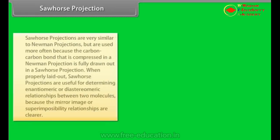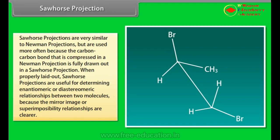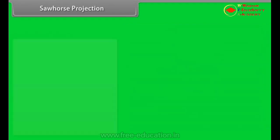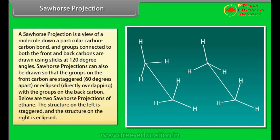Sawhorse projection. Sawhorse projections are very similar to Newman projections, but are used more often because the carbon-carbon bond that is compressed in a Newman projection is fully drawn out in a sawhorse projection. When properly laid out, sawhorse projections are useful for determining enantiomeric and diastereomeric relationships between two molecules because the mirror image or superimposability relationships are clearer. Like with the Newman projections, a sawhorse projection is a view of a molecule down a particular carbon-carbon bond and groups connected to both the front and back carbons are drawn using sticks at 120 degree angles. Sawhorse projections can also be drawn so that the groups on the front carbon are staggered 60 degrees apart or eclipsed directly overlapping with the groups on the back carbon. Below are two sawhorse projections of ethane. The structure on the left is staggered and the structure on the right is eclipsed. These are the simplest sawhorse projections because they have only two carbons and all of the groups on the front and back carbons are identical.